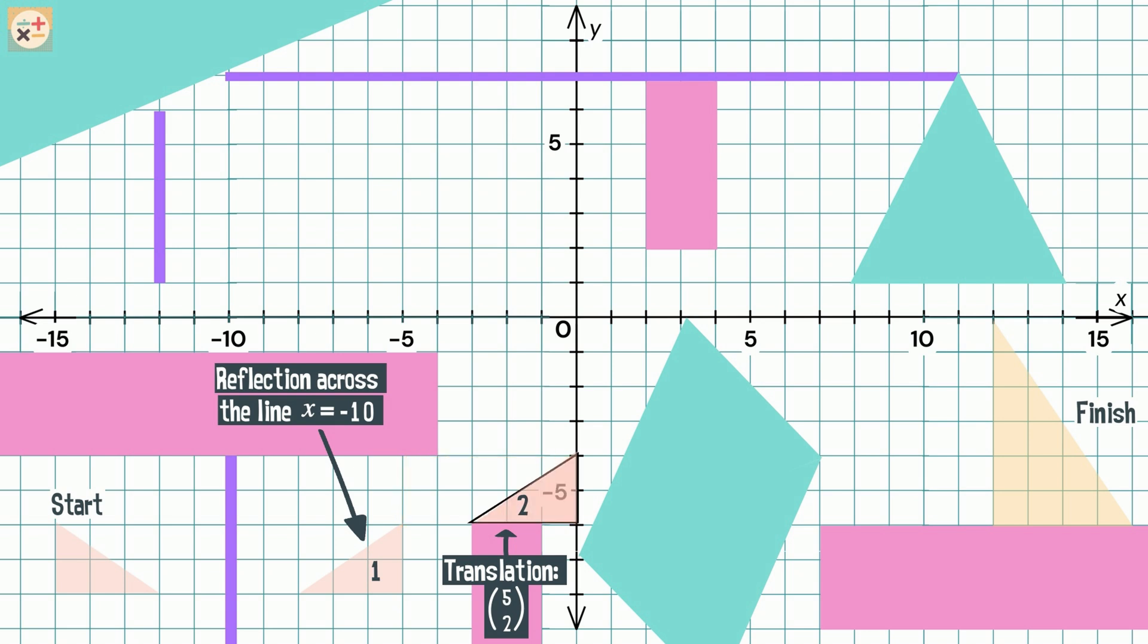The third move also uses translation. The shape has moved eight spaces to the right, and six spaces upwards.